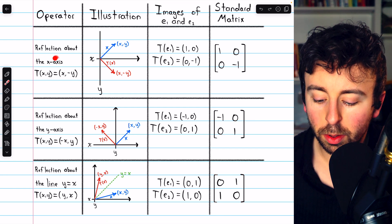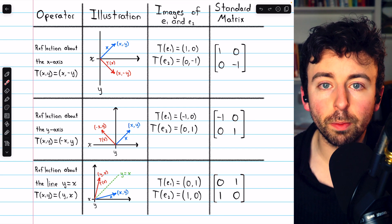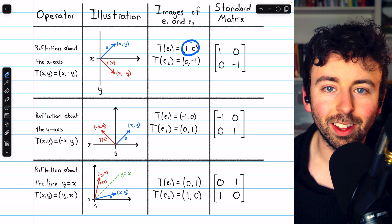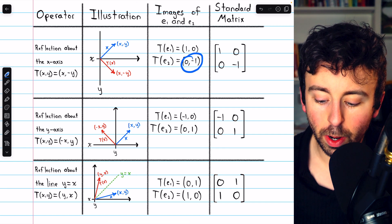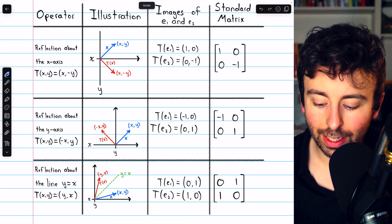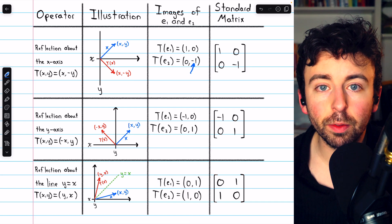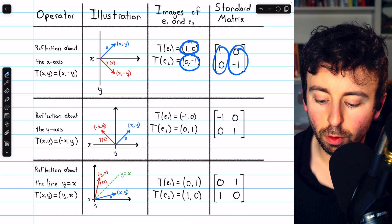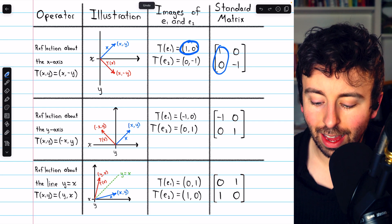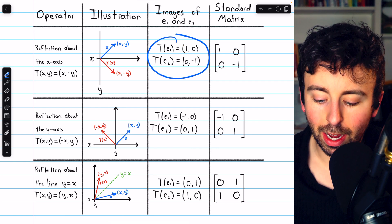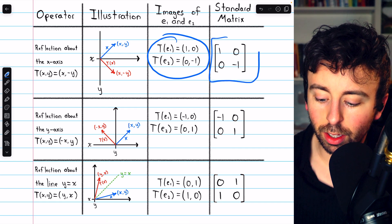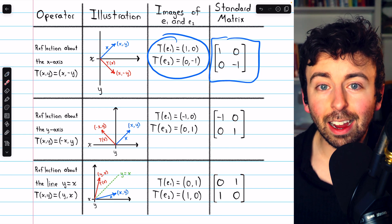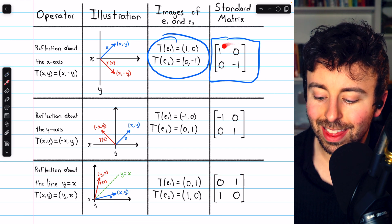What does reflection about the x-axis do to the standard basis vectors in R-squared? When we plug in (1, 0), it doesn't do anything. And when we plug in (0, 1), the 1 in the y-coordinate gets hit with a negative. We take these two images to build the columns of the standard matrix. So reflection about the x-axis in R-squared is just multiplication by this matrix.